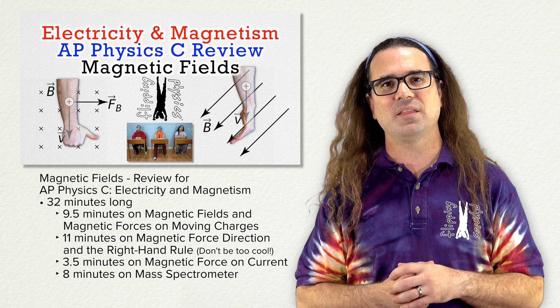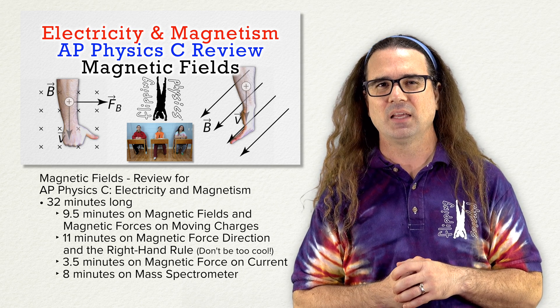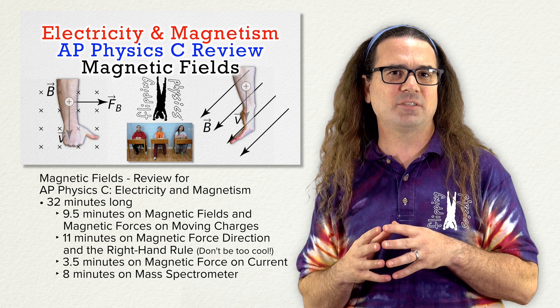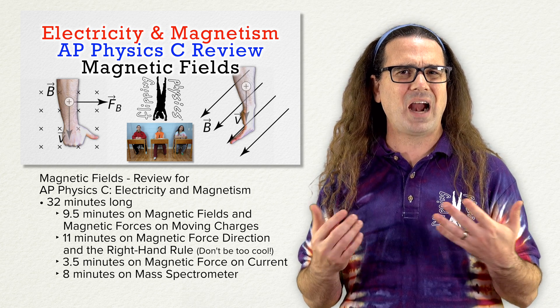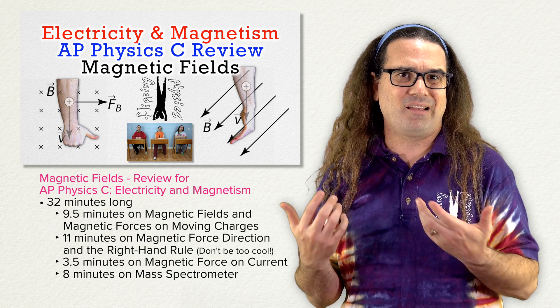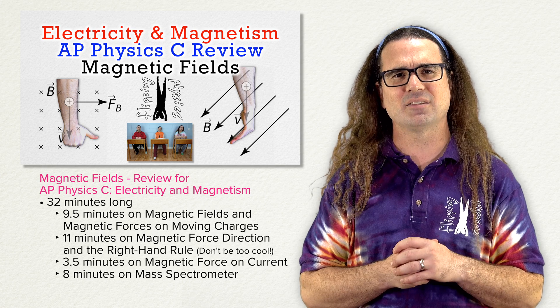and 8 minutes on the mass spectrometer. However, if you are looking for a video on the mass spectrometer and you search for mass spectrometer in YouTube, you are highly unlikely to click on a 32 minute video labeled Magnetic Fields Review for AP Physics C electricity and magnetism.